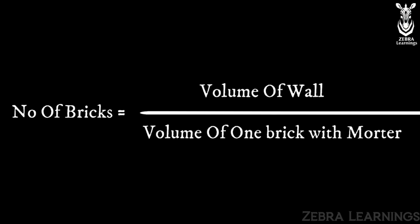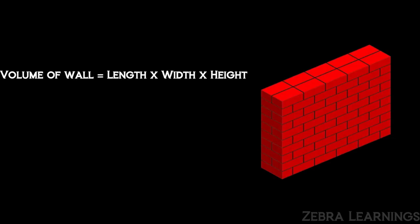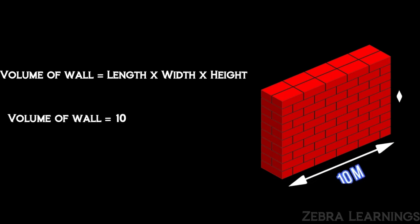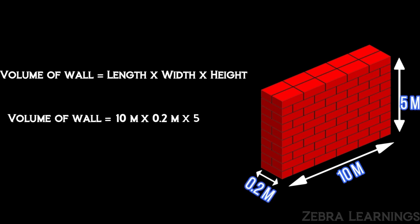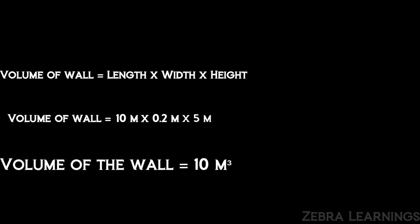First, let us find the volume of the wall. The formula of volume is length multiplied by width multiplied by height. Length is 10 meters, width is 0.2 meters, and height is 5 meters. Multiply these three and we will get 10 cubic meters. This is the volume of the wall.